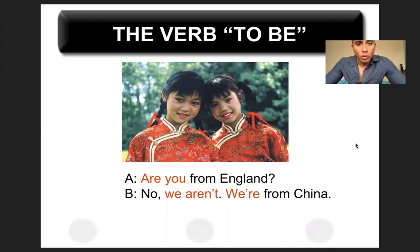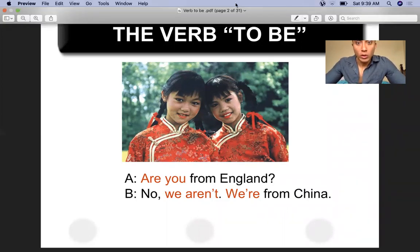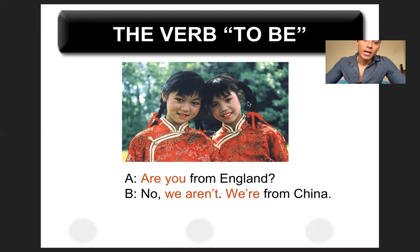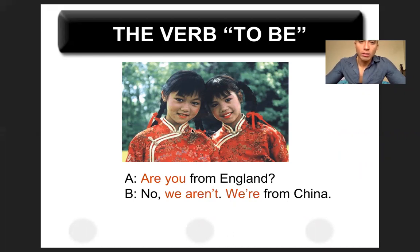What is the verb to be? ¿Qué es el verbo to be? El verbo to be en español llega a ser el verbo ser o estar. En inglés nosotros tenemos el verbo to be que sería am, is, are. Aquí tenemos un ejemplo: Are you from England? No, we aren't. We are from China. ¿Eres de Inglaterra? No, no somos. Nosotros somos de China. Aquí tenemos are y aren't en la forma negativa. Vamos a ver cuáles son los tres del verbo to be.